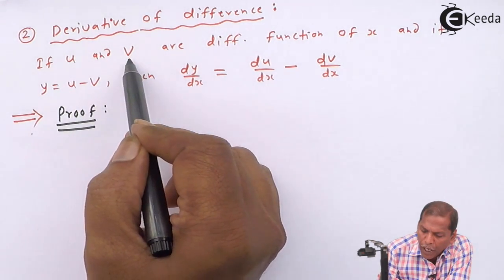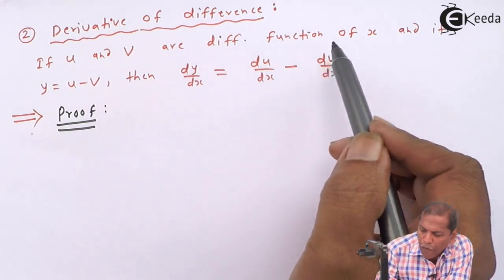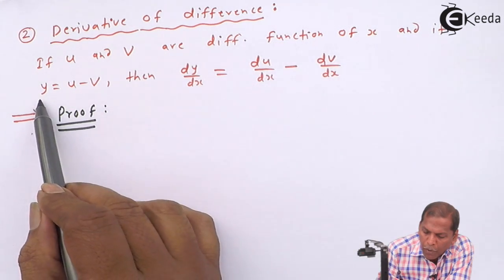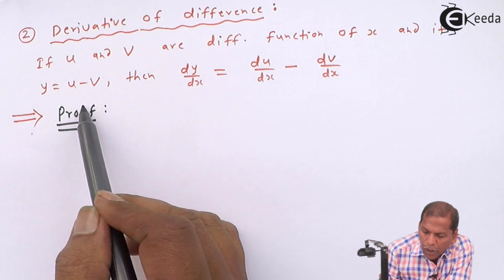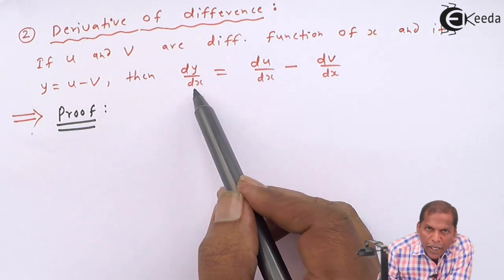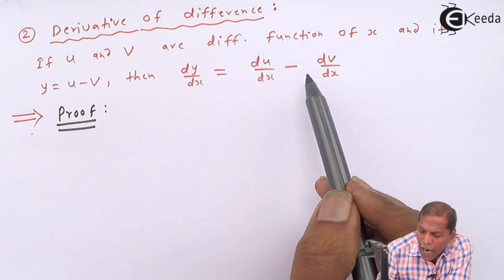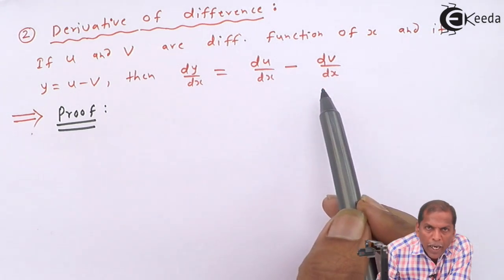If u and v are differentiable functions of x and if y equals u minus v, then dy/dx equals du/dx minus dv/dx.